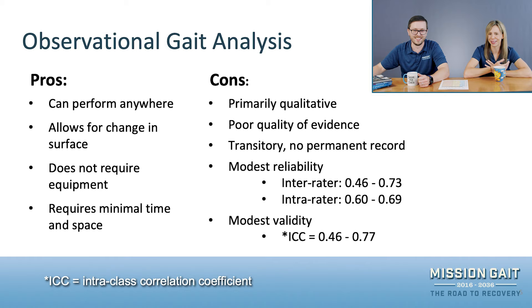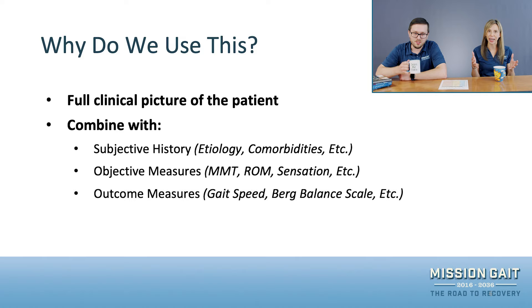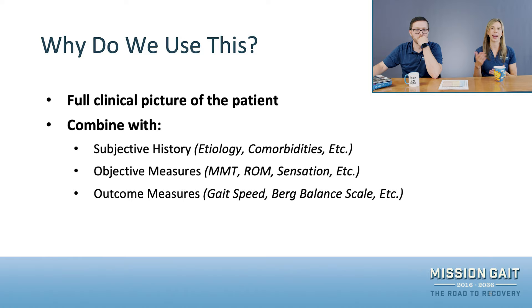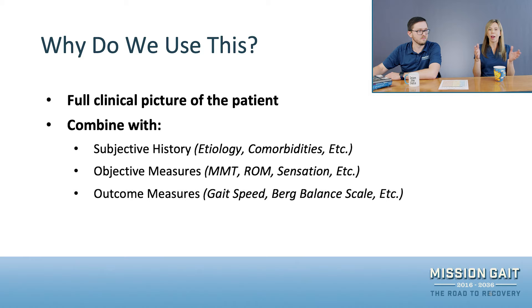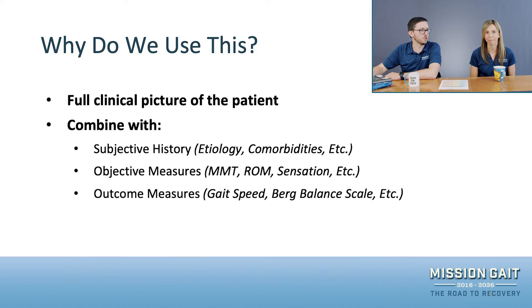So why do we do this, given that evidence isn't great? Think about what it provides you — it allows you to complete the clinical picture of your patient. When you combine it with a subjective history, which includes the patient's history, the etiology behind their complaint, their past medical history, comorbidities, and goals, and then add in objective measures like range of motion, strength, and sensation testing, and even outcome measures like their Berg Balance Score or gait speed on a 10-meter walk test — then you step back, watch them walk, and take this global picture of them. Now you've got the whole picture of that patient, which provides a lot of context.